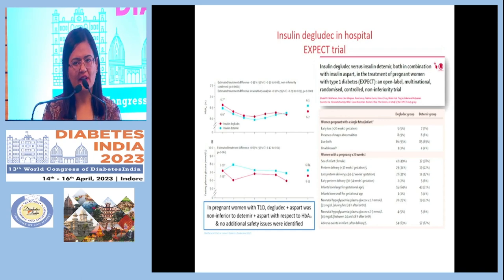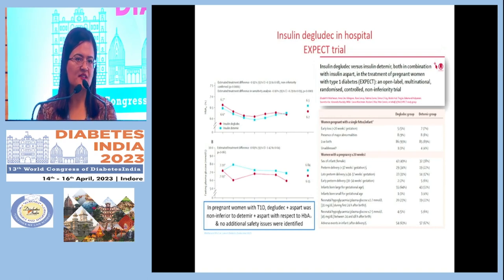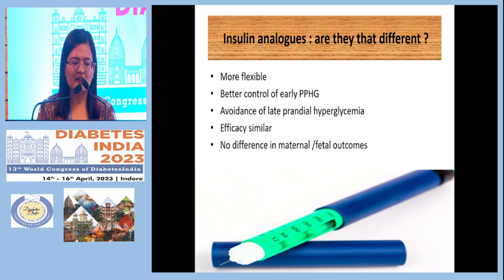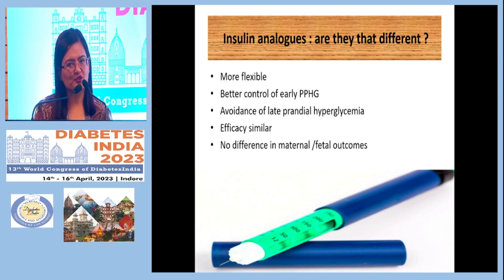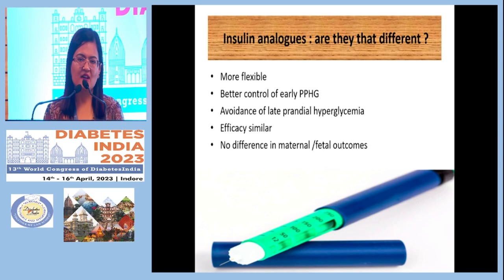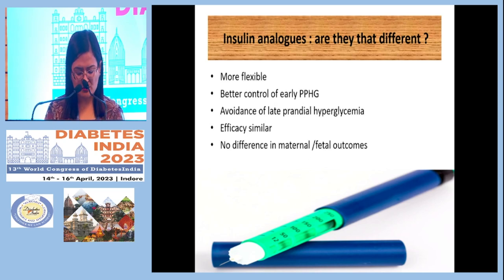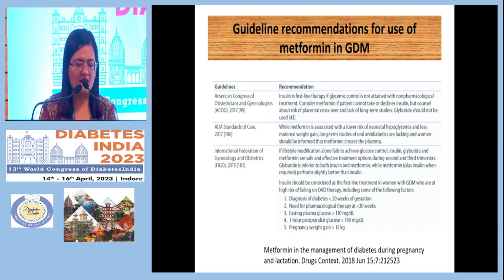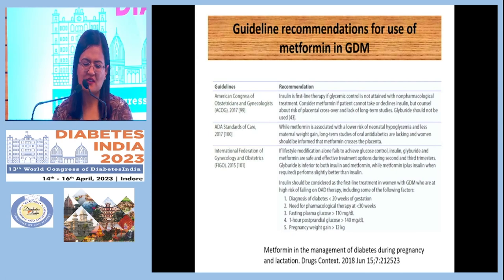The EXPECT trial showed that degludec with aspart had comparable results to detemir in type 1 diabetic patients, with no adverse effects in pregnancy. Insulin analogs offer more flexibility, better postprandial control, and less hypoglycemia. They are similar to regular insulin in HbA1c control but allow dosing 5 to 10 minutes before meals, compared to 30 minutes for regular insulin.